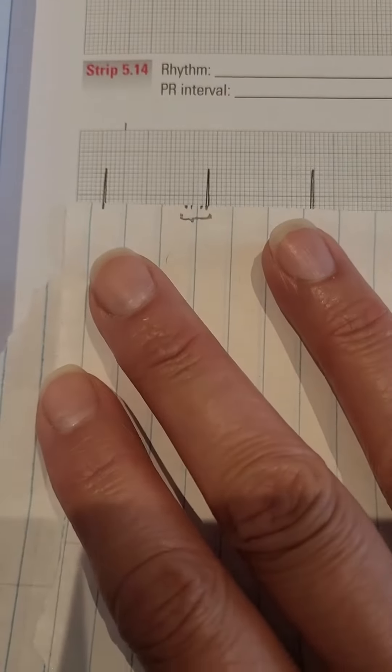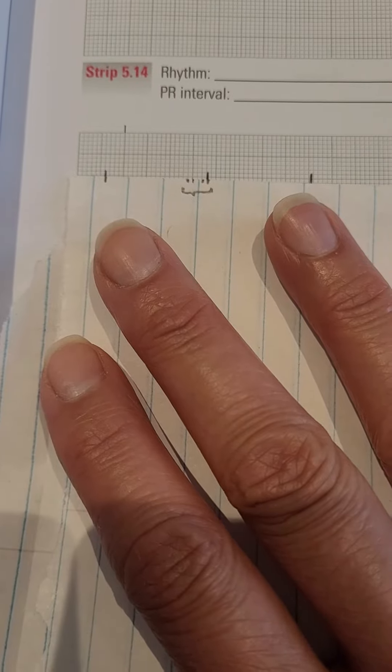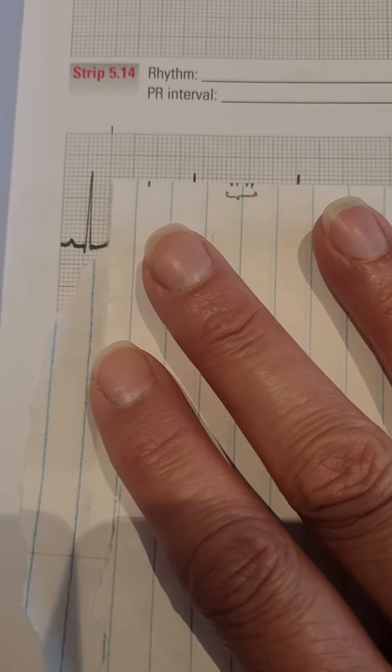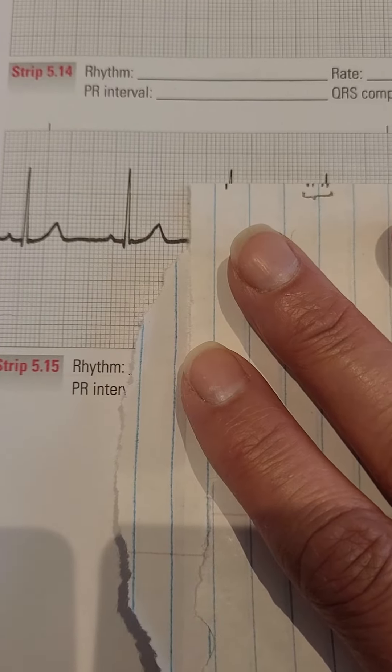Strip 515 demonstrates irregular rhythm. Start by marking the first two complexes, then mark subsequent complexes using the straight edge of a piece of paper.